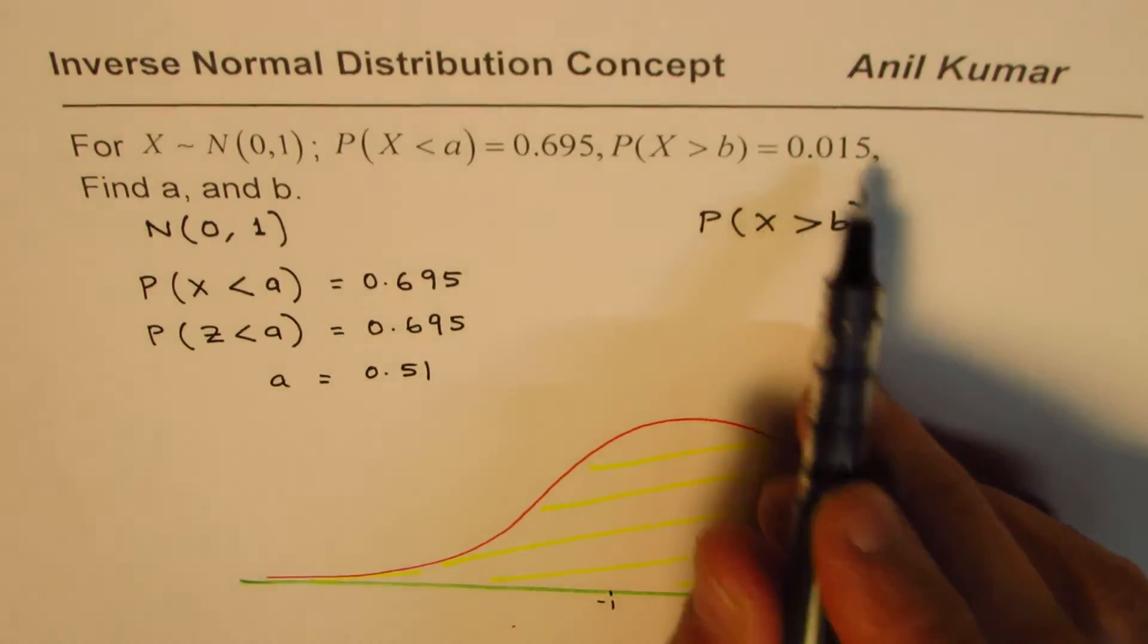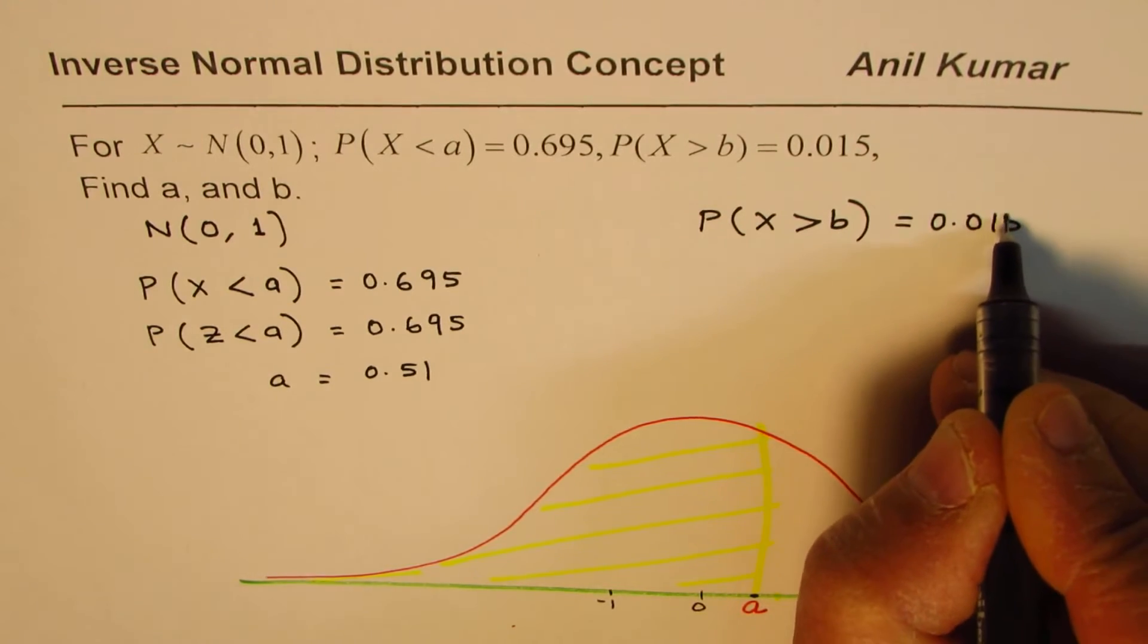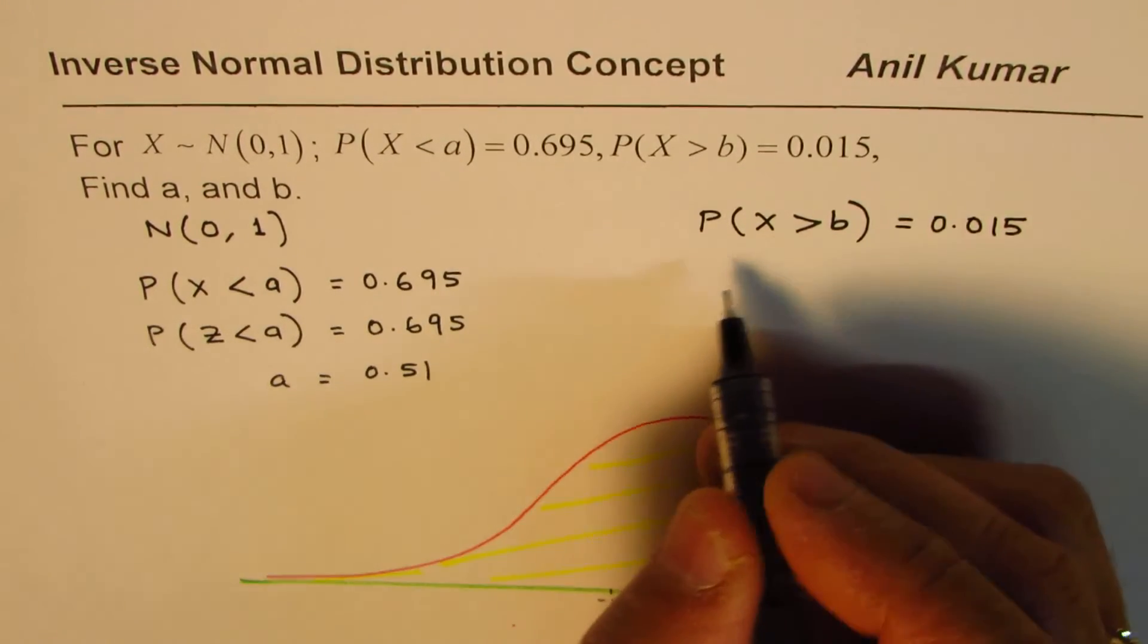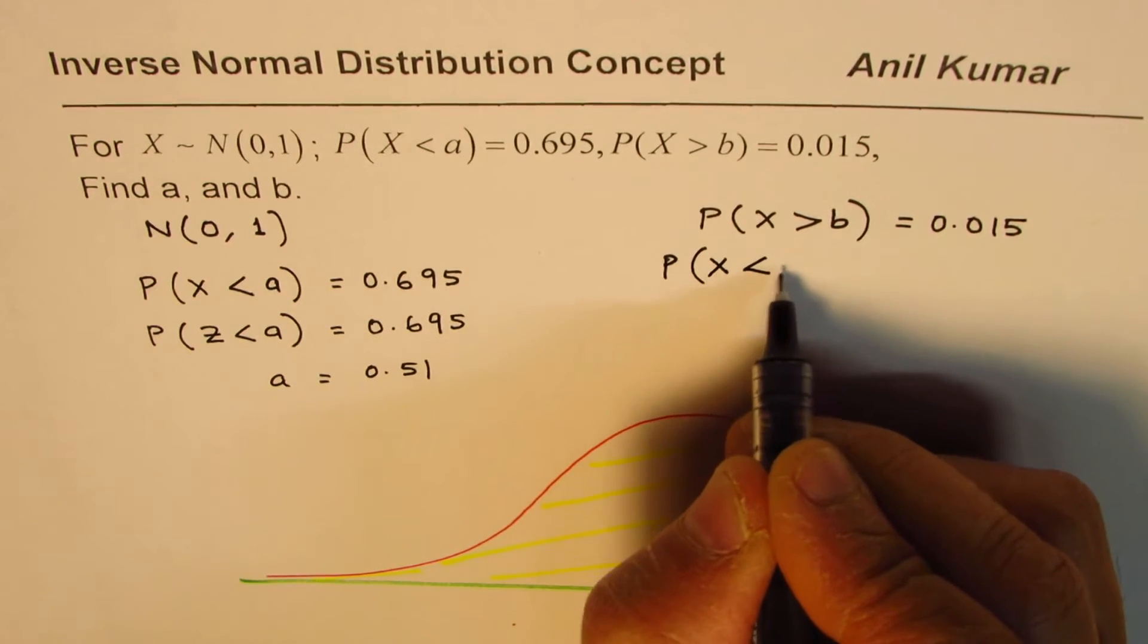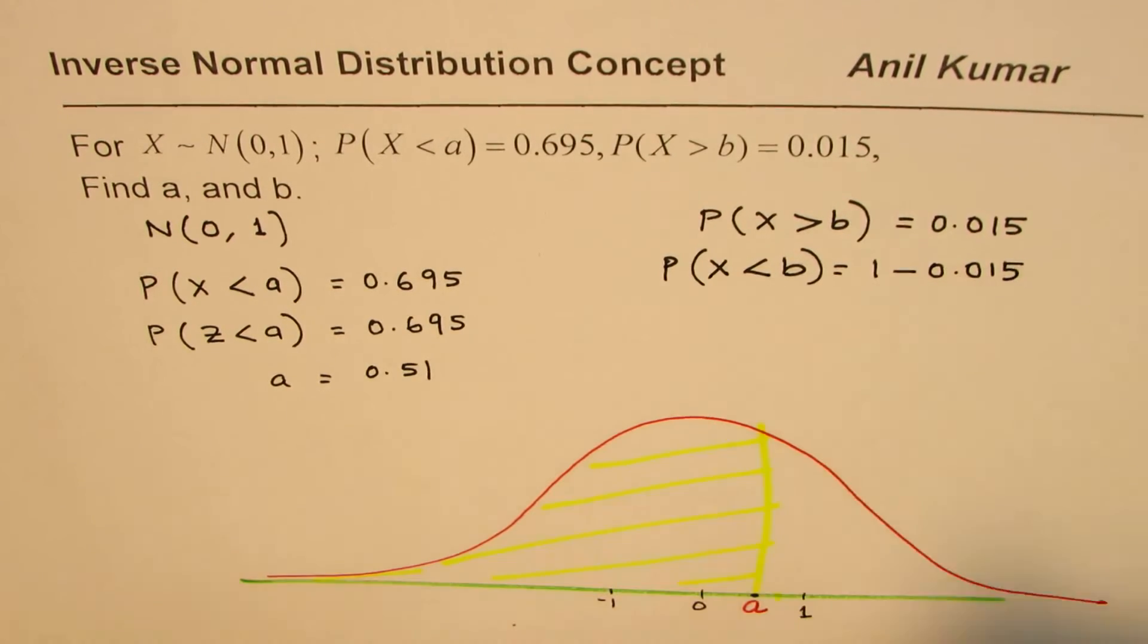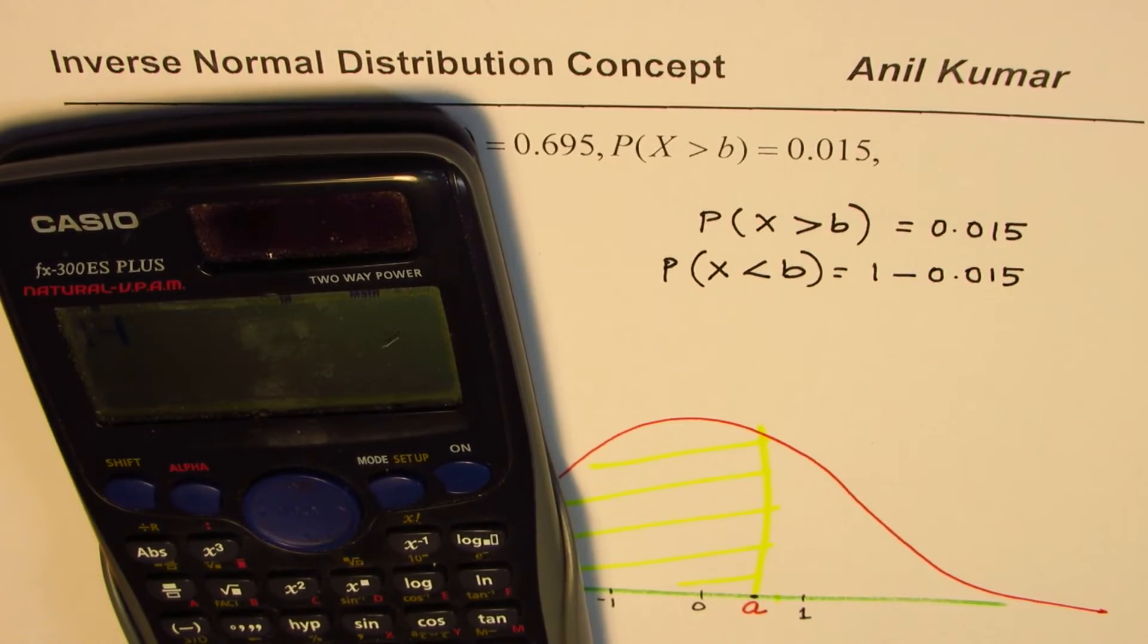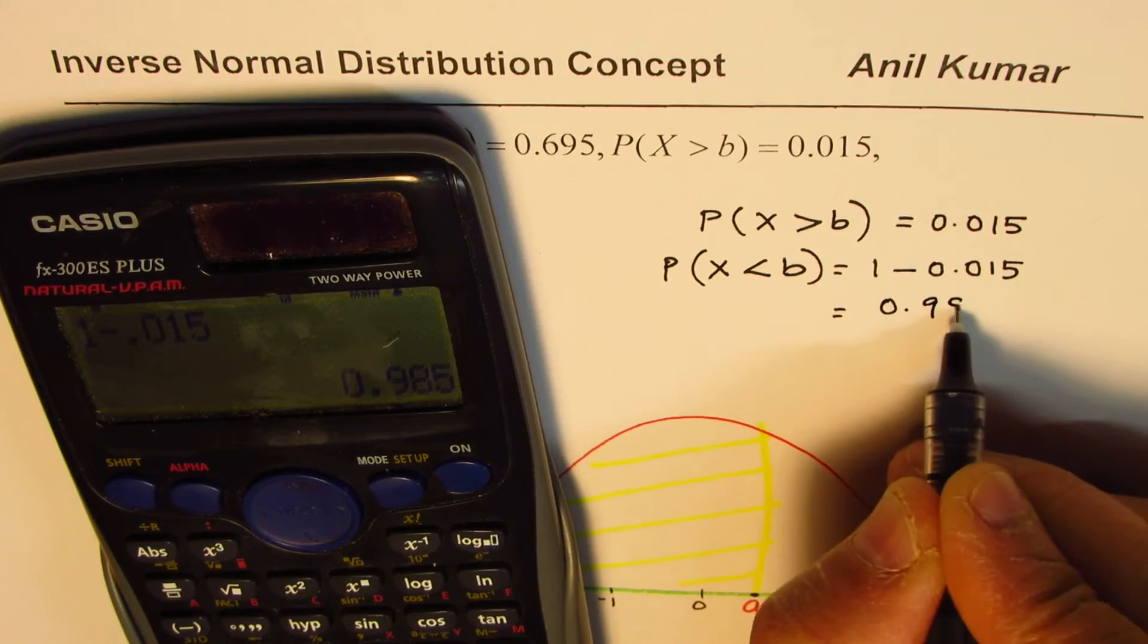Now, b is greater than, so we are saying probability of this is greater than 0.015. We know greater than b is this much, so the table which we have is for less than. So how do we write probability for X less than b? That should be 1 minus this, 1 minus 0.015. Total area is 1, total probability is 1. So 1 minus, that's the complement, 1 minus 0.015 gives you, in decimals, equals to 0.985.